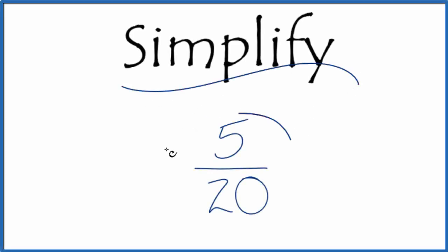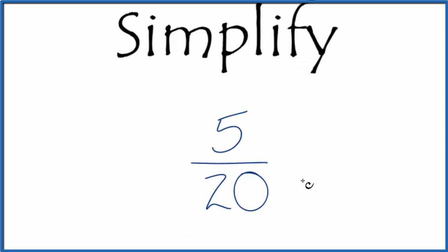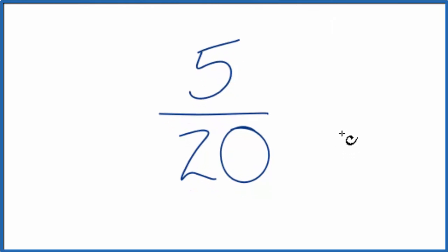Let's simplify the fraction 5 over 20. So what we're trying to do is find another fraction that's equivalent to 5 over 20. It has the same value, it's just written in lowest terms.